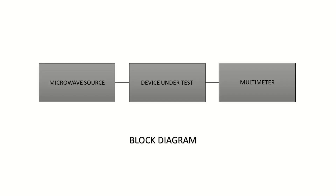So here we are having our setup and block diagram. Our block diagram consists of a microwave source, a device under test block, and a power meter.